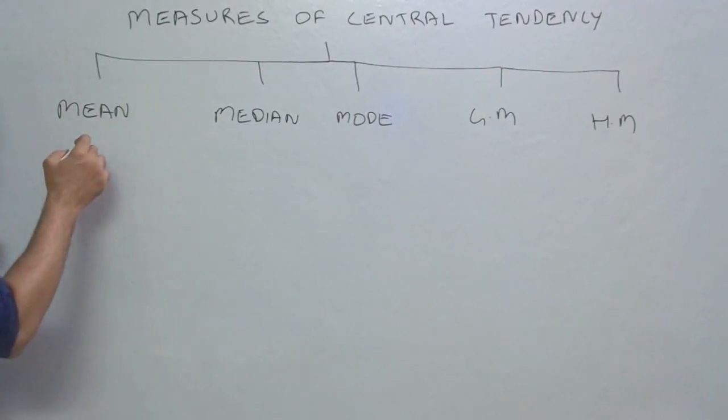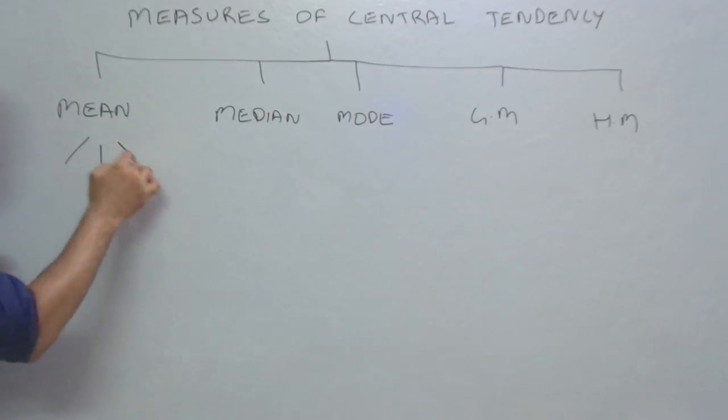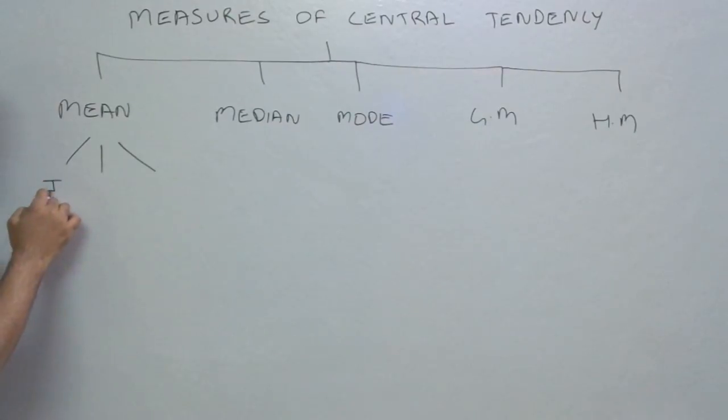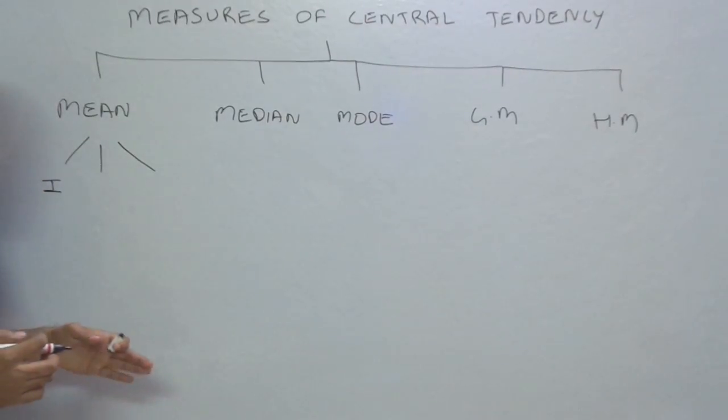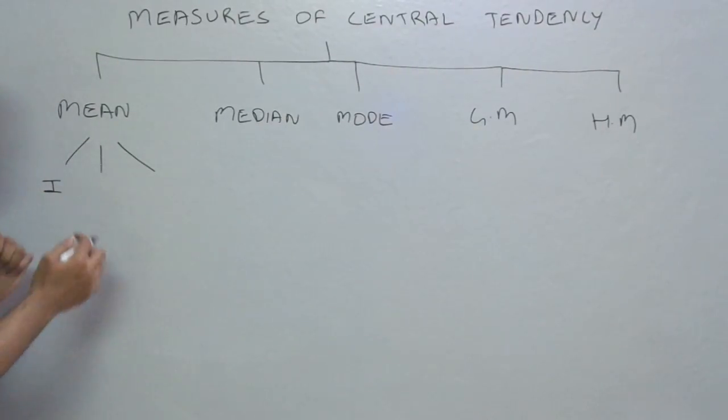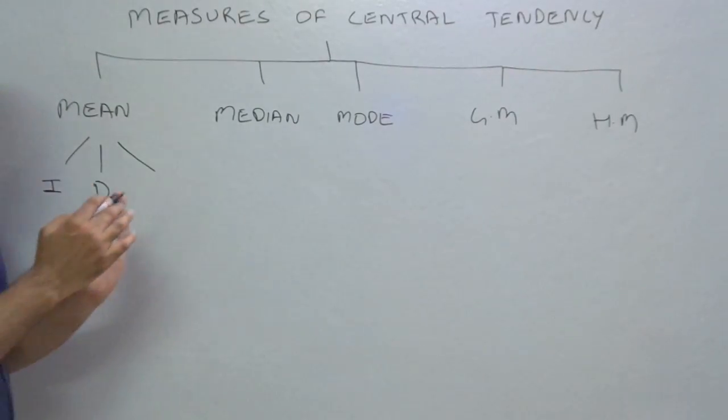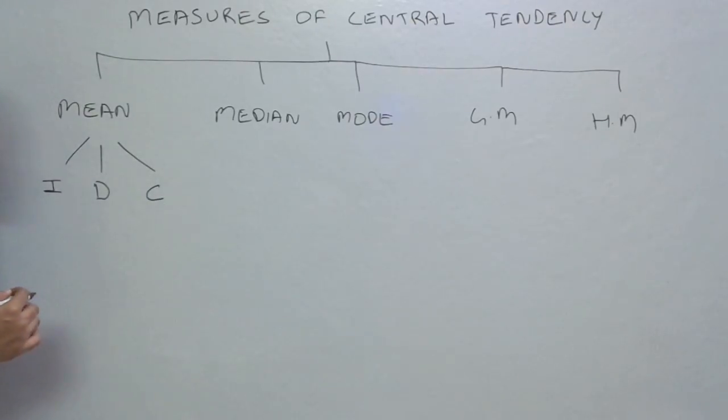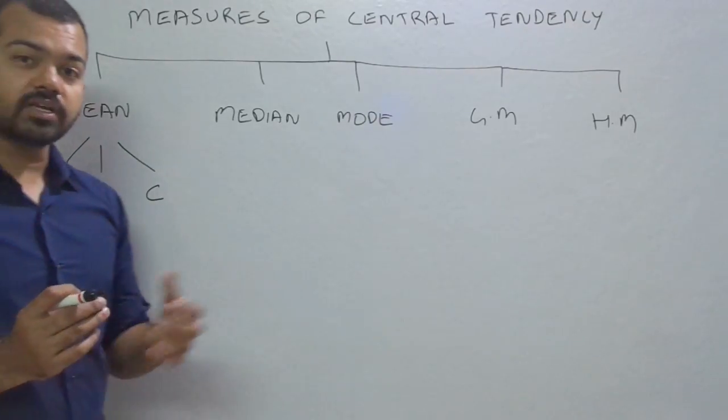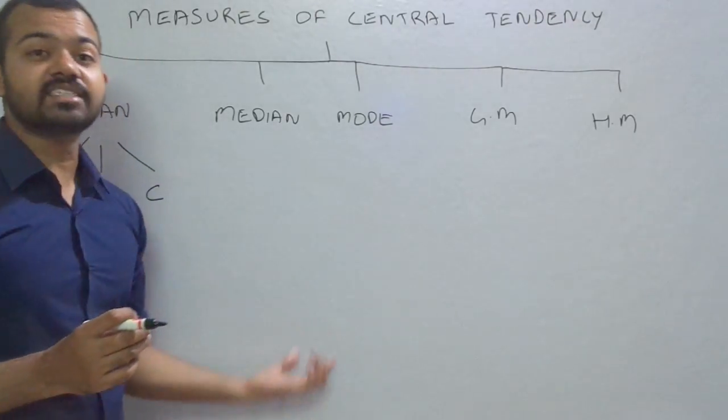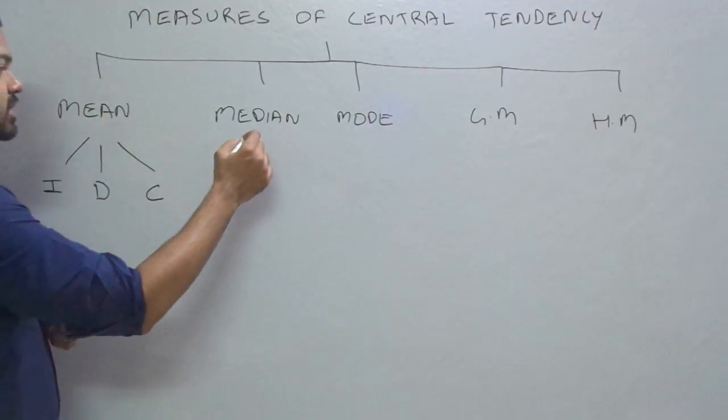For mean, we are dealing with three series. Individual series are simple numbers; you just have to calculate the total numbers. Discrete series are given with the help of frequencies. And the third one is continuous series, also known as class intervals.